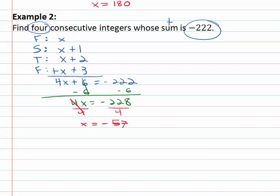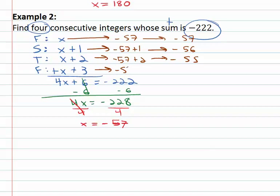But does that answer our question? Not yet, we're asking for the four consecutive integers. We've only found the first which is x negative fifty-seven. So the first one is negative fifty-seven. The second one, and you could almost do this without doing the algebra, negative fifty-seven plus one is negative fifty-six. Make sure we're counting up and not down. Adding two, negative fifty-seven plus two is negative fifty-five and adding three, negative fifty-seven plus three is negative fifty-four. And these are our four consecutive integers who have a sum of negative two hundred twenty-two.